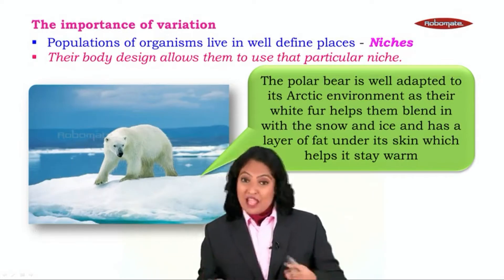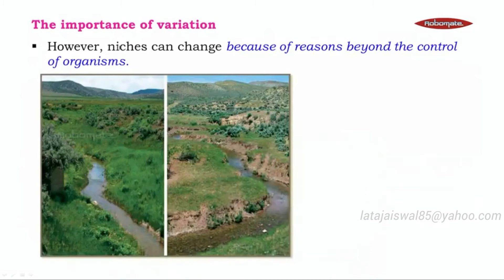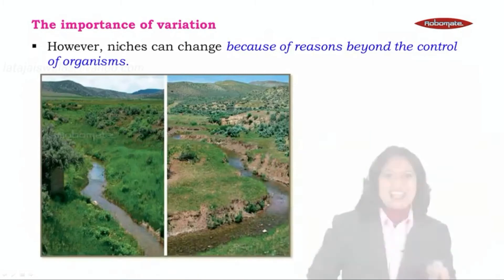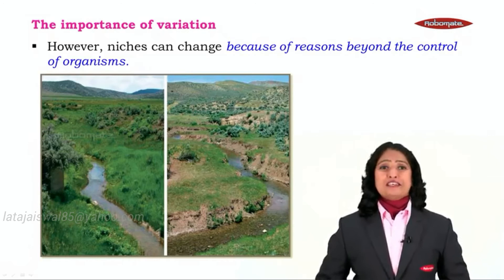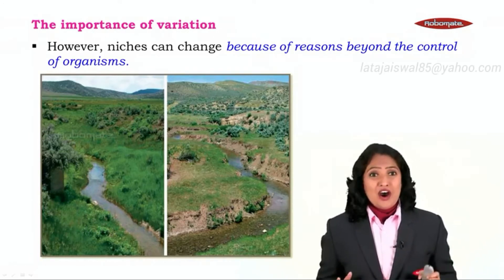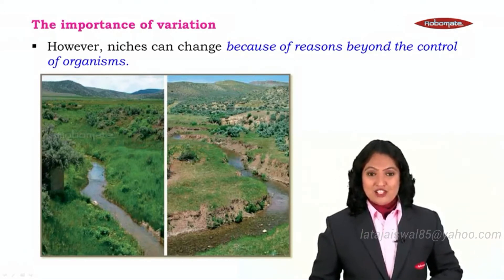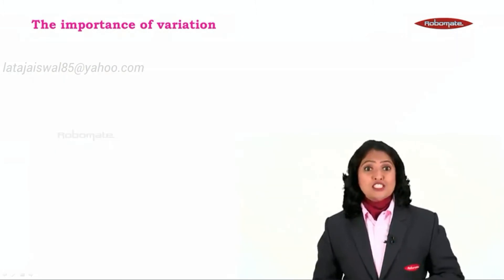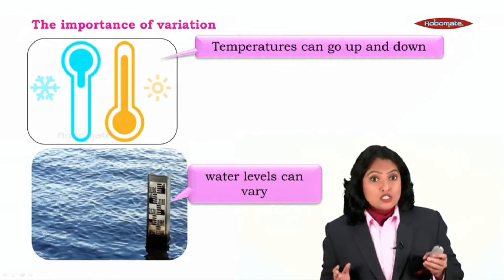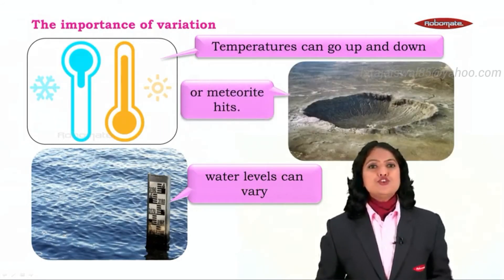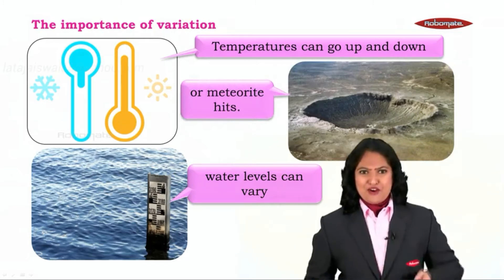Body design has helped the polar bear to survive successfully in the arctic environment. However, niche can change because of reasons beyond the control of organisms. We all know the earth's atmosphere is constantly changing, and the earth's face is constantly changing. That means the niches are also going to constantly change. Temperatures can go up and down, water levels may vary, or there can be a meteorite that hits our earth — all these can change the ecological niche present on this earth.